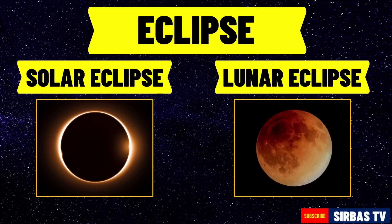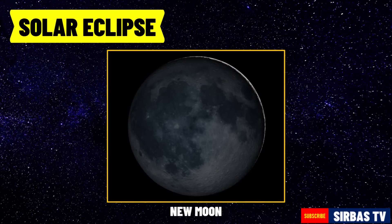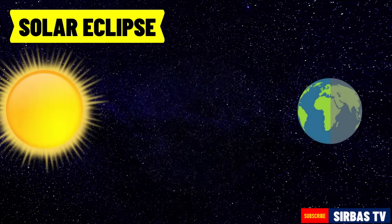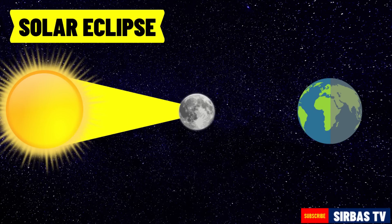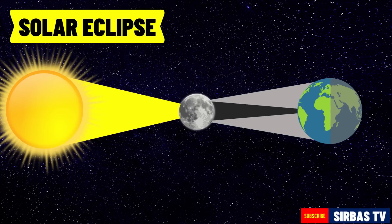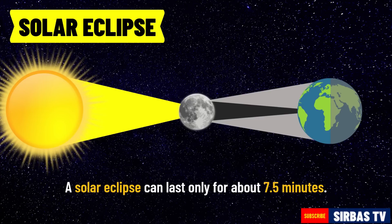Let us first explore the solar eclipse. A solar eclipse occurs during a new moon and takes place during the day. It happens when the Moon passes between the Earth and the Sun. In this case, the Moon blocks the light coming from the Sun to Earth. A shadow of the Moon is casted on the surface of the Earth. A solar eclipse can only last for about 7.5 minutes. Your location on the shadow of the Moon casted on Earth will determine the type of solar eclipse that you will observe.